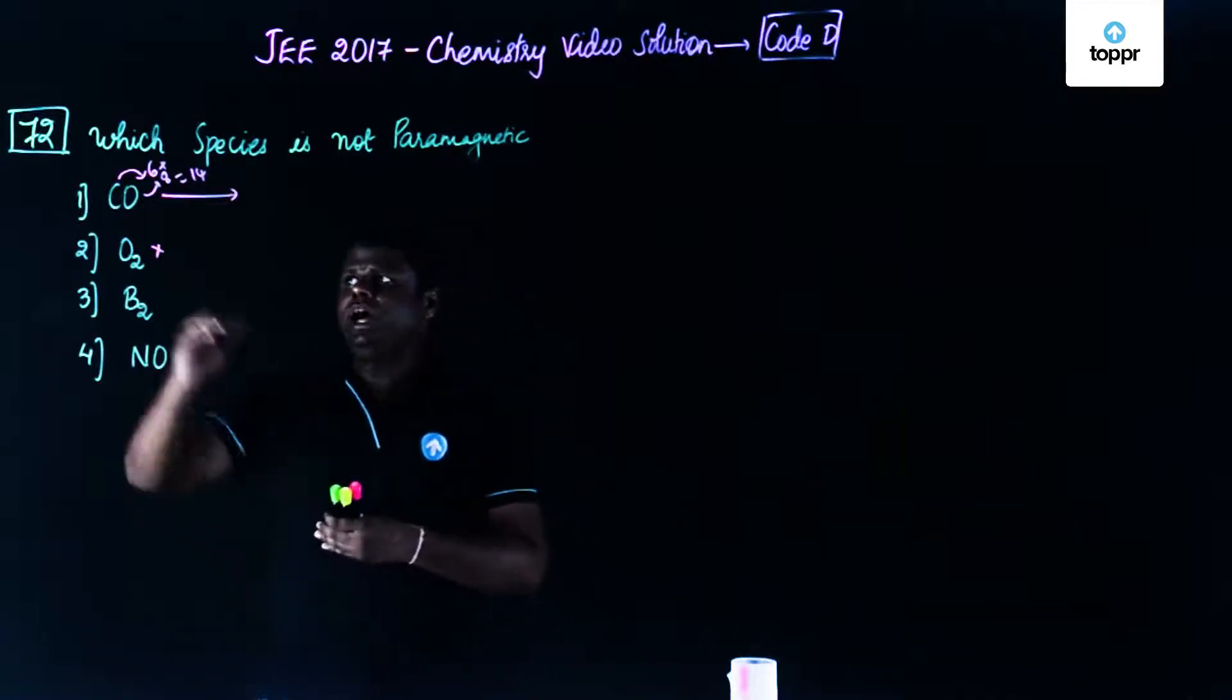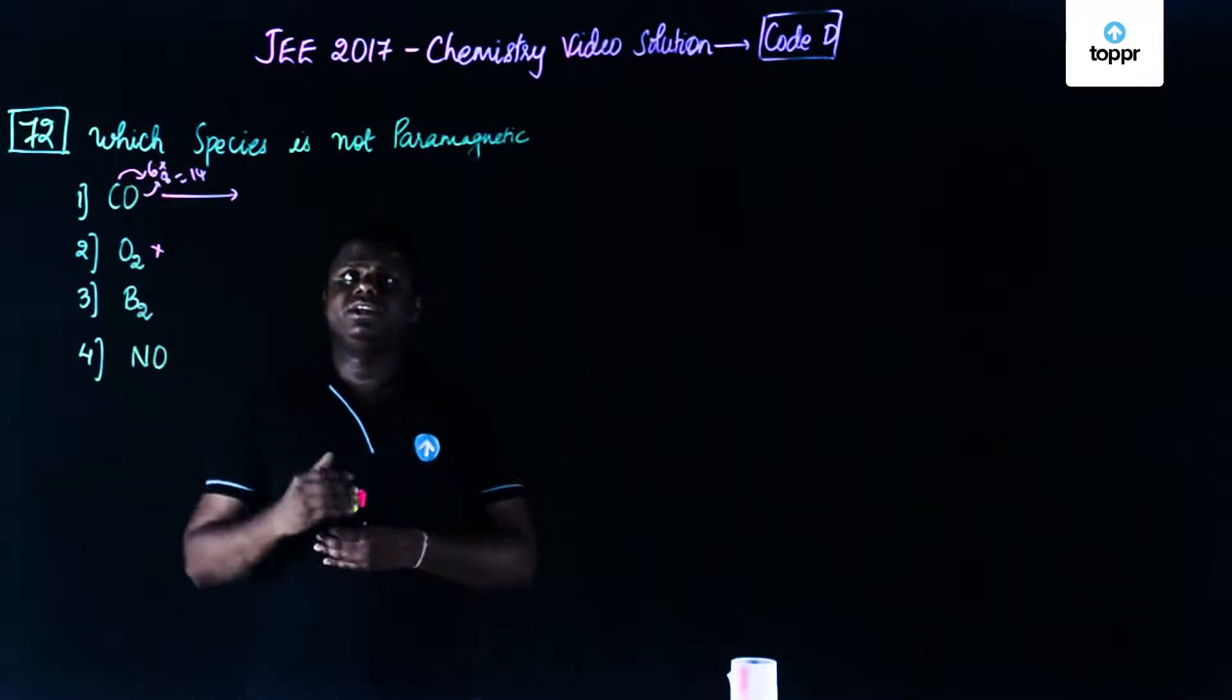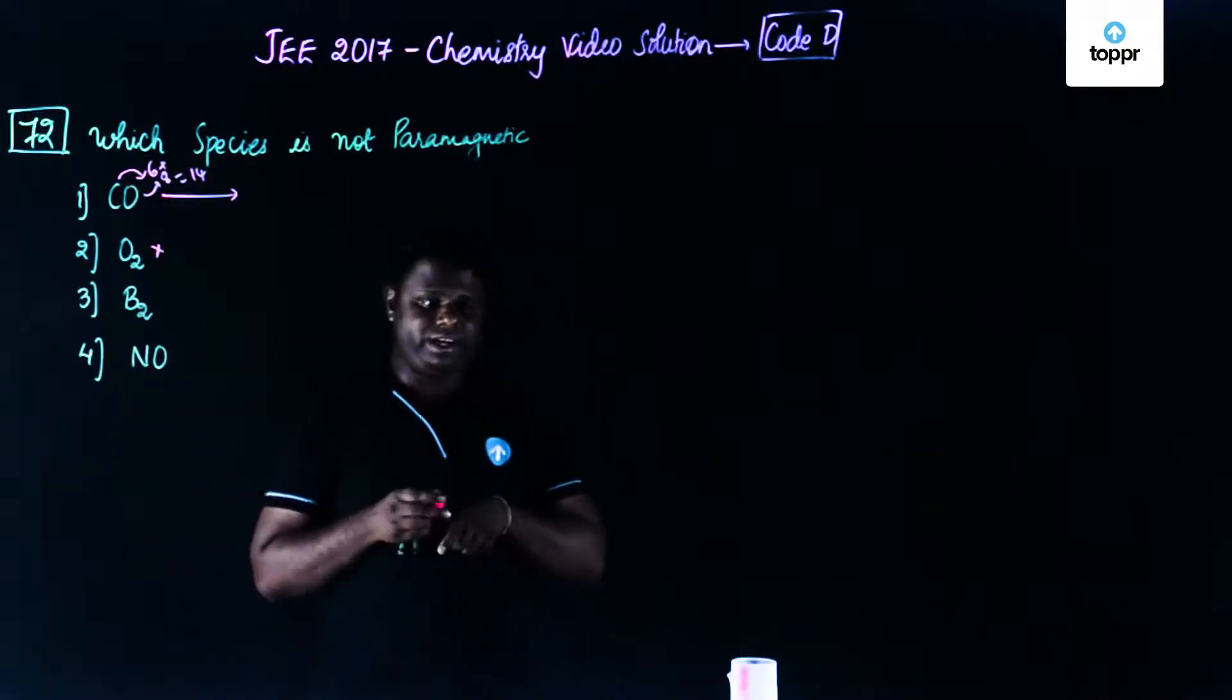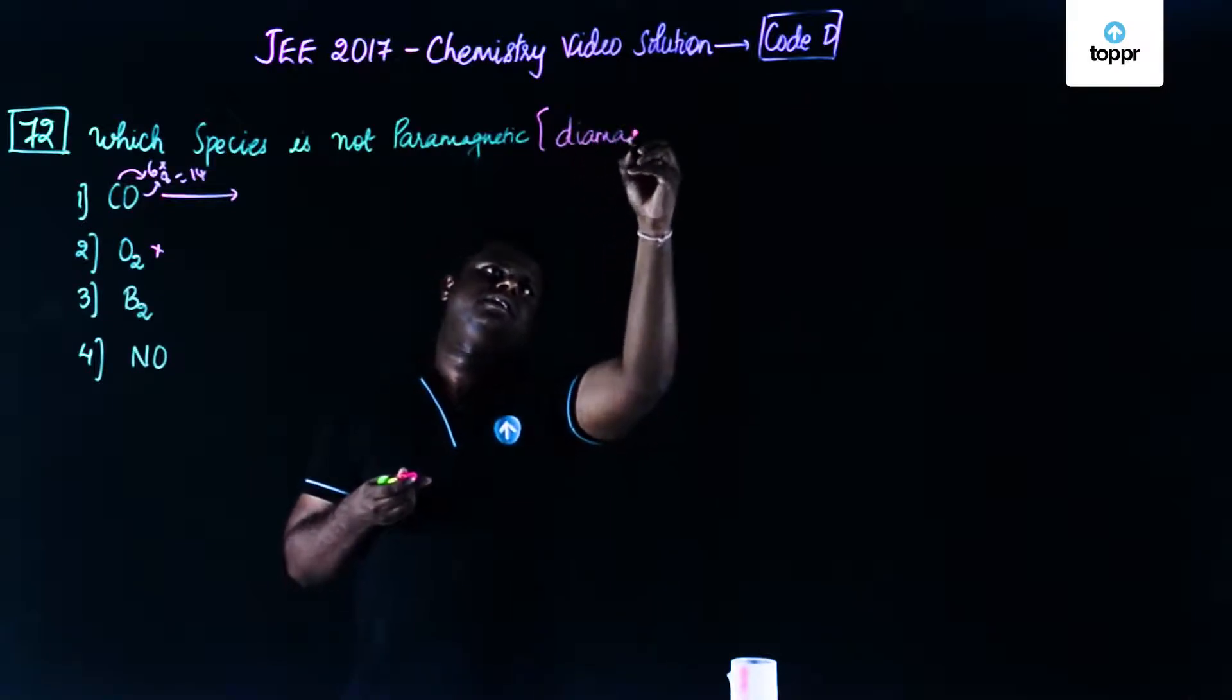Which species among these is not paramagnetic? What exactly does this mean? You have carbon monoxide, oxygen, boron and NO. Among these you are supposed to say which is not paramagnetic or which is more diamagnetic.